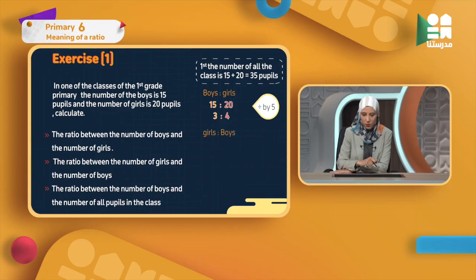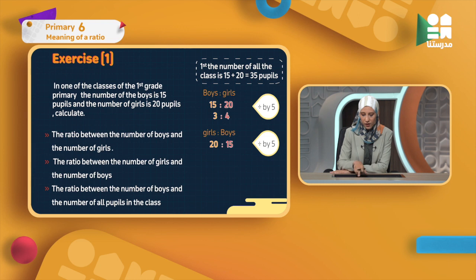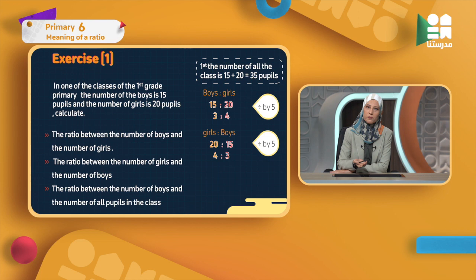The second point asks between the number of girls and the number of boys. I write girls first as the first term, boys as the second term. Girls is 20 to 15. Both 20 and 15 can be divided by 5, giving 4 : 3. This means four girls for every three boys.